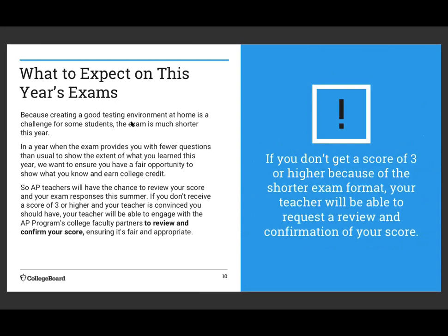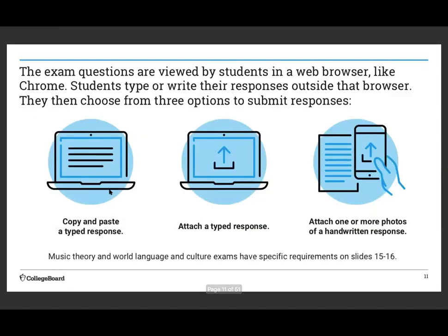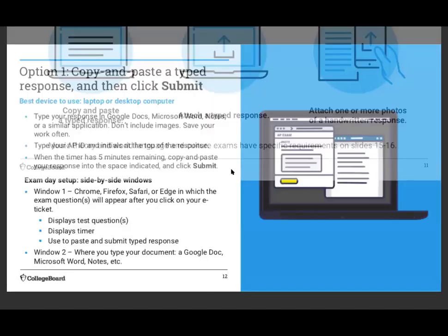It's very important that you create a good testing environment for yourself. Because they know it's hard to maintain a good environment for a long time, it's a much shorter exam — only two questions. If you get something lower than a 3, I get to review your score and make sure it's been scored accurately, so you can essentially contest a score below 3. The three ways to submit your answer are: copy and paste a typed response, attach a typed response, or handwrite it and take a photo. I'm going to give you the specifics on each.